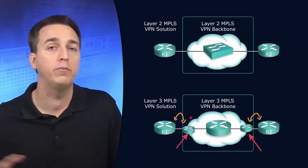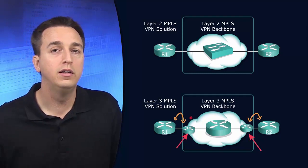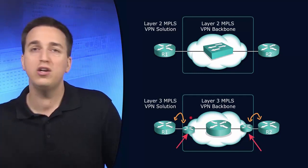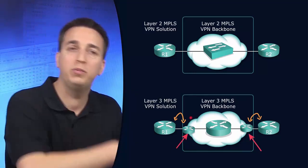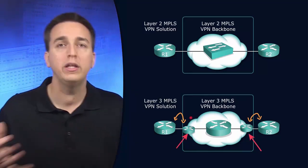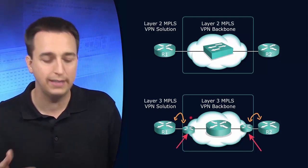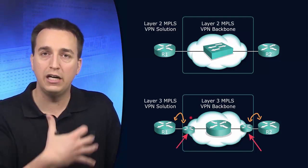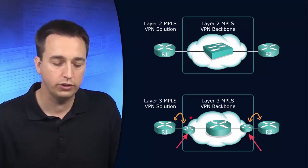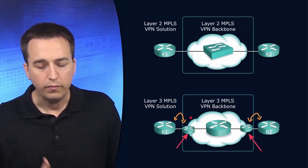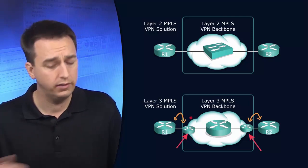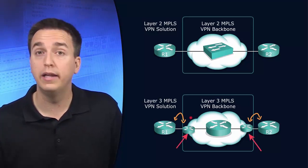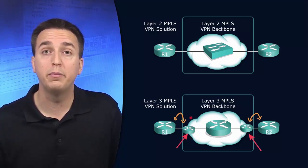So you don't need to use the same routing protocol on each end. You could use EIGRP on one side and OSPF on the other side. It really all depends on what you and your service provider decide to use and what you are using inside your local infrastructure. As a result, it's just being redistributed through that Layer 3 MPLS VPN backbone.